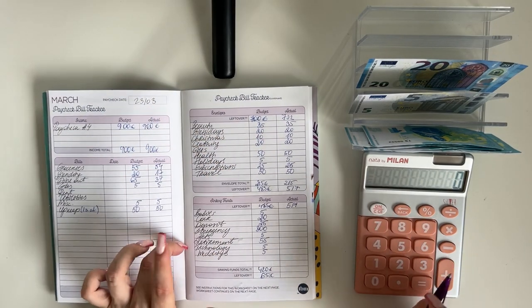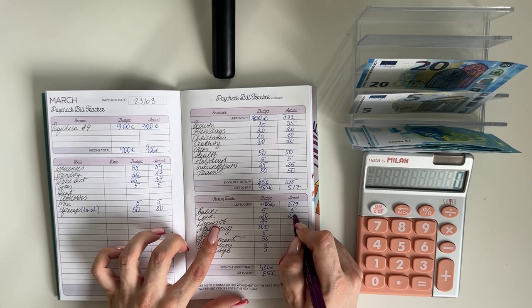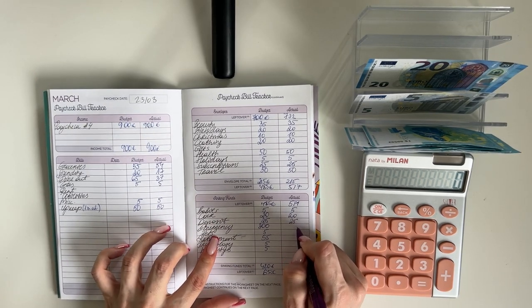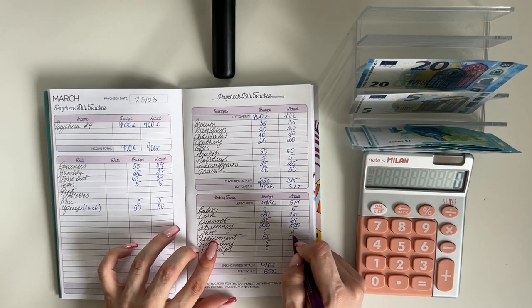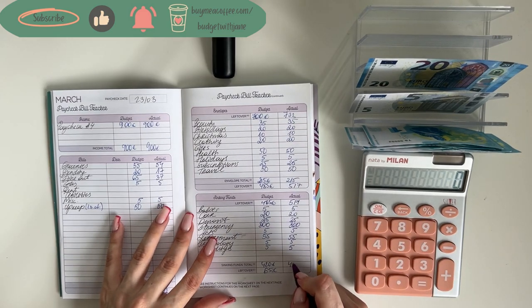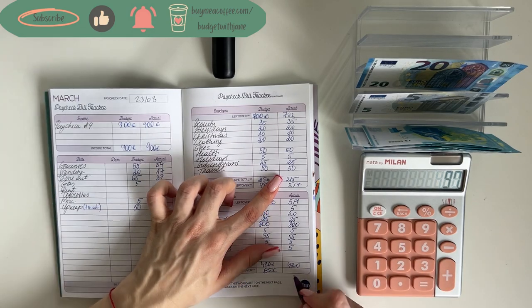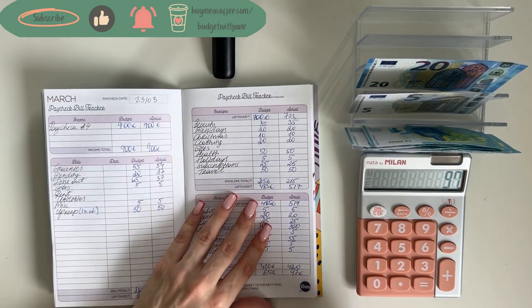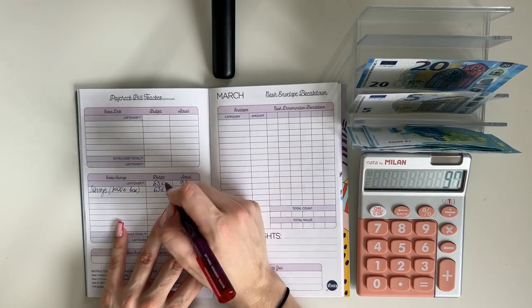We're bringing that down here to long-term sinking funds. Everything here stayed the same as well. Five into babies, 20 into car, 25 into deposit, 300 in emergency, five in pets, 55 retirement, and five in each weddings and technology. So that was 420. 517 minus 420 is 97 euros.